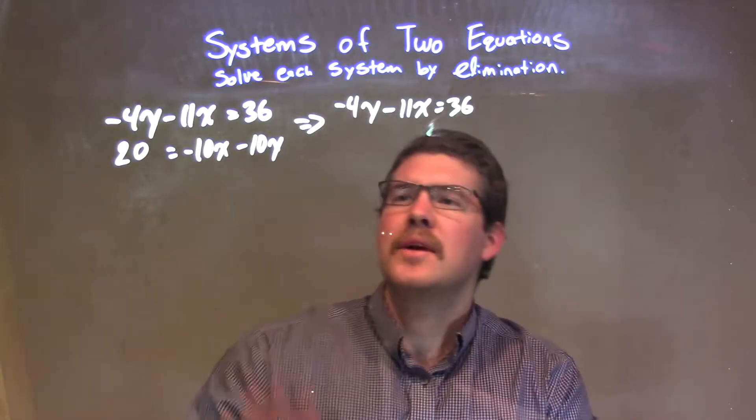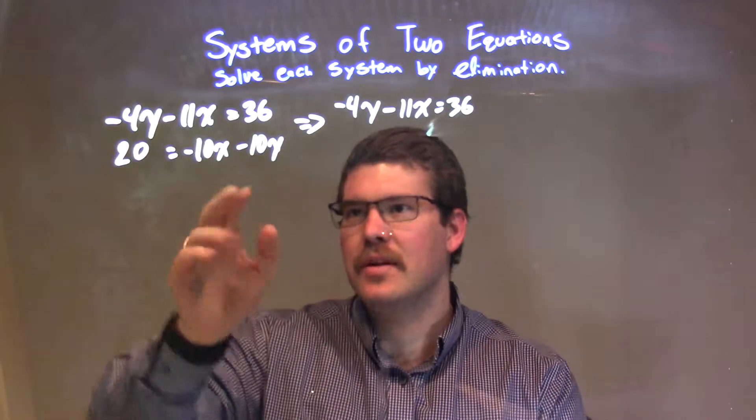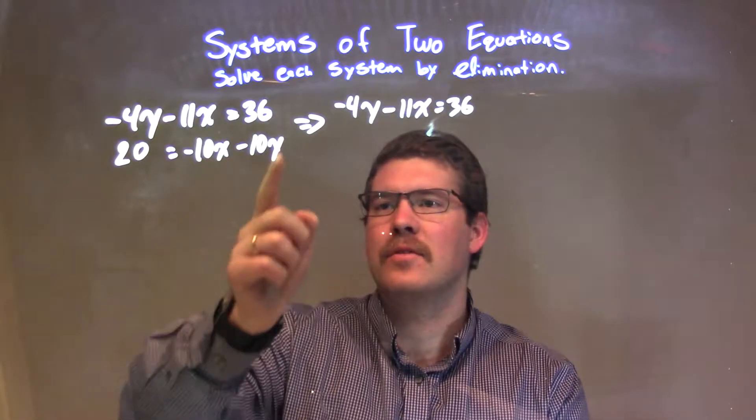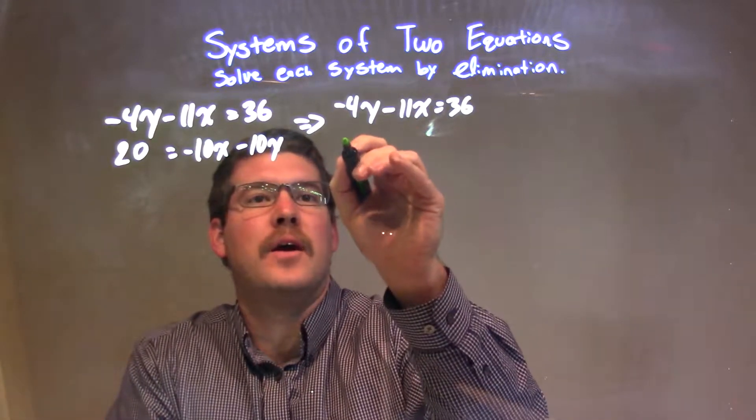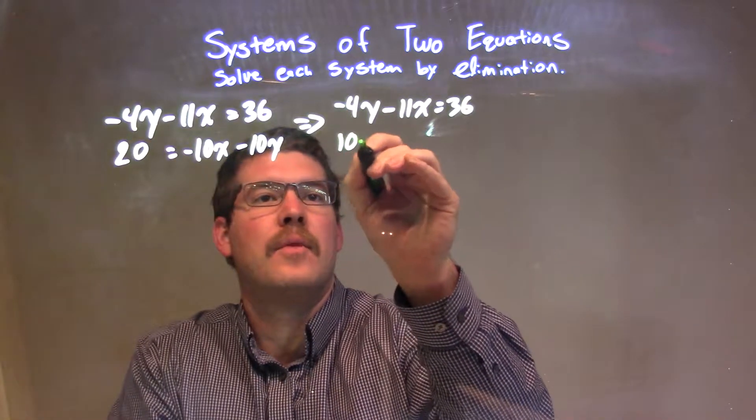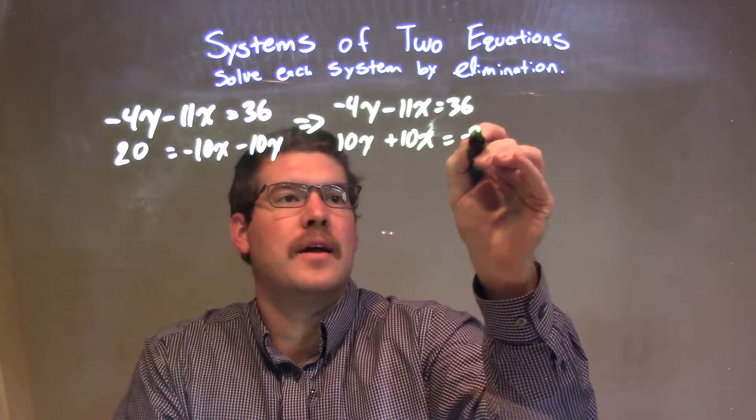The second one, you can essentially just flip it, but what I'll do is say I'm going to add the 10x to both sides, the 10y to both sides, and just subtract the 20. So we have positive 10y plus 10x equals negative 20.